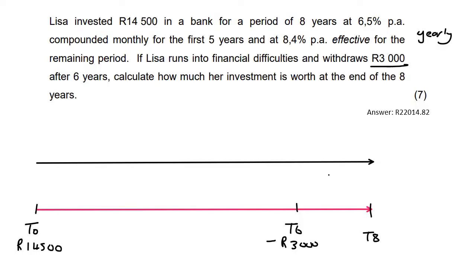Now, let's look at the interest rate. So it looks like for the first five years, from T0 up to T5, which would be there, we are using 6.5% monthly.